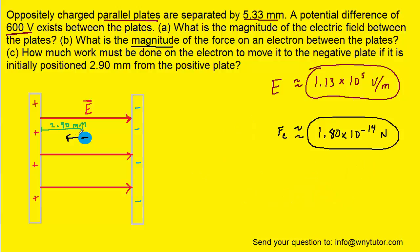Now, in part C, we are told that the electron is located 2.9 millimeters from the positive plate. We're going to end up moving it over to the negative plate, so we have to figure out this distance. We were told that the total distance between the plates is 5.33 millimeters. So if we subtract 5.33 by 2.9, we can easily get the distance from the electron to the negative plate, and we see that we get 2.43 millimeters.